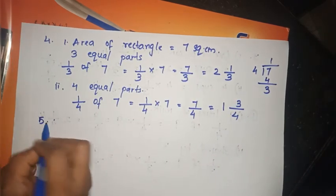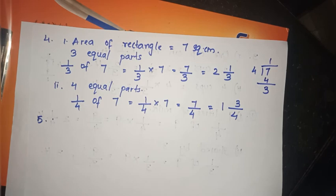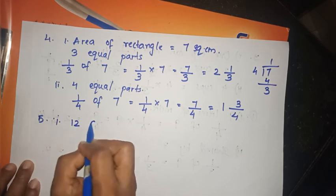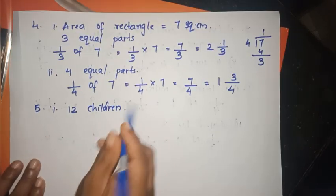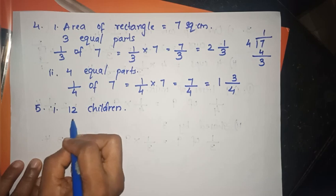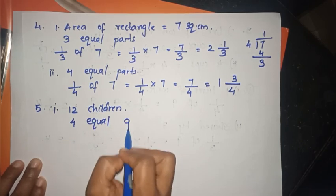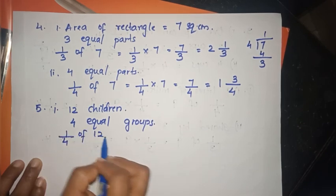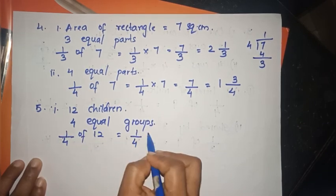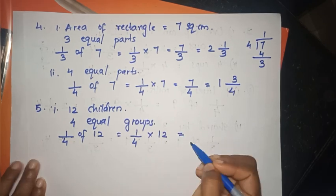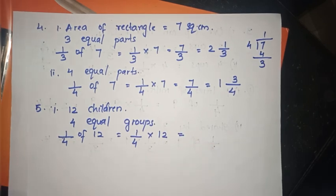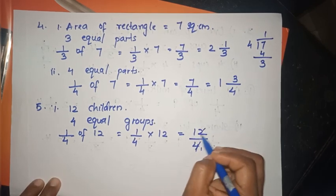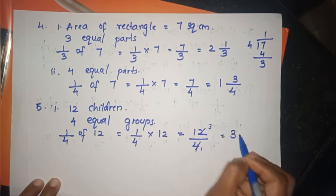Now the next question: 12 children are divided into 4 equal groups. How many children are in each group? We calculate 1/4 of 12, which is 1/4 into 12, equal to 12/4. 4 threes are 12, so we get 3 kids.